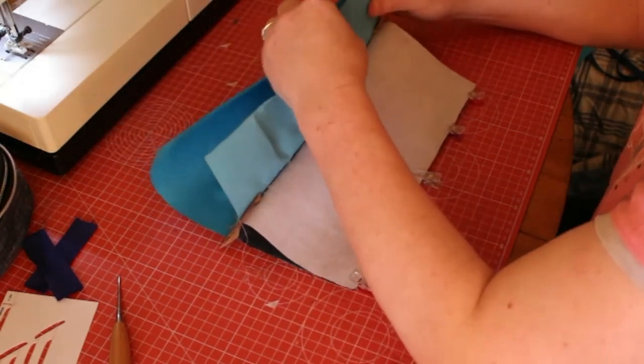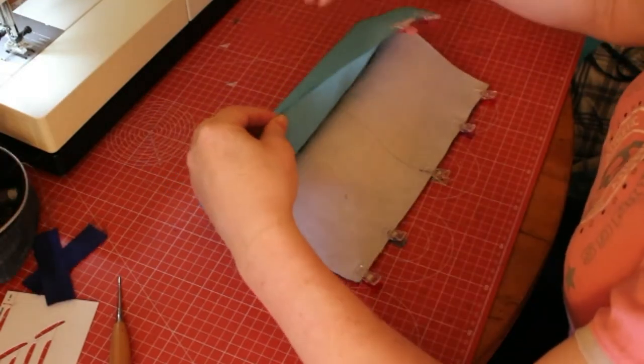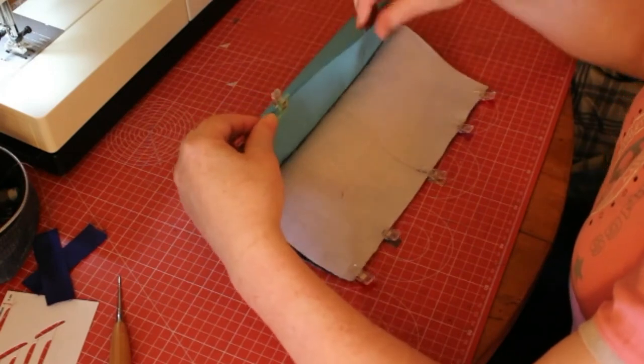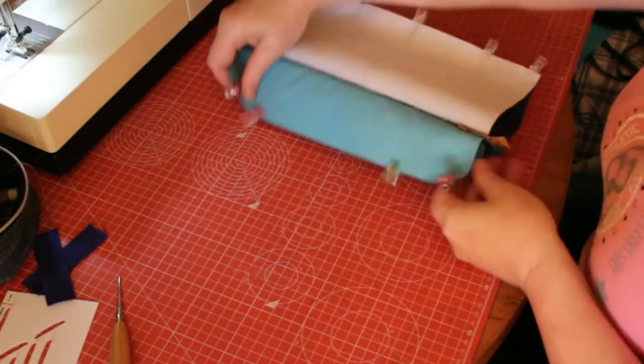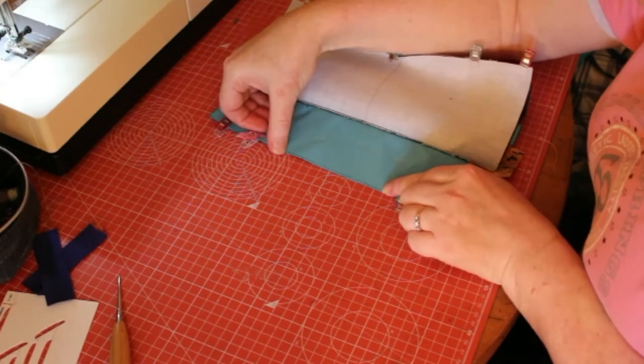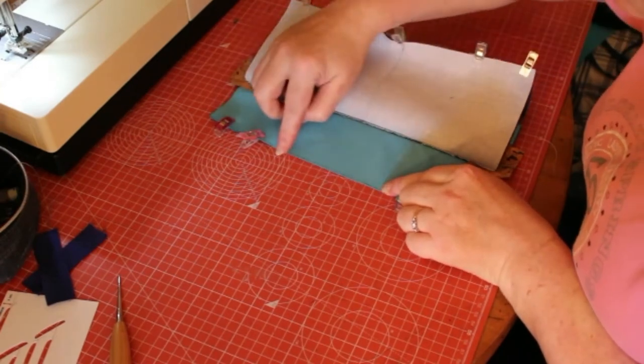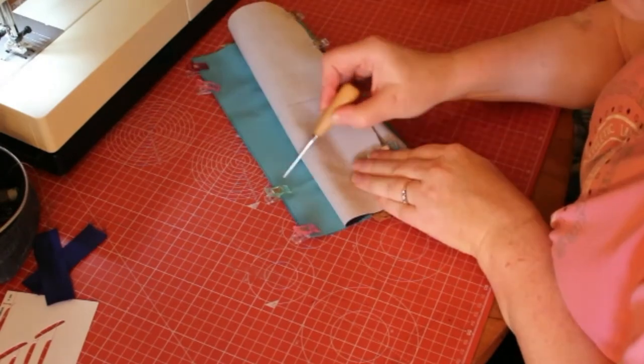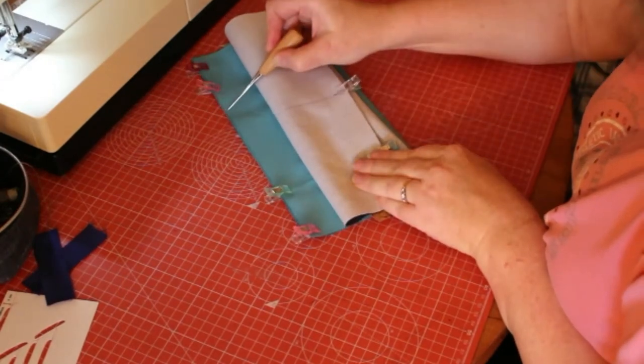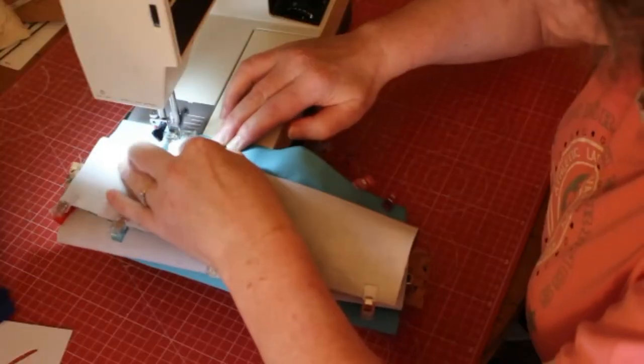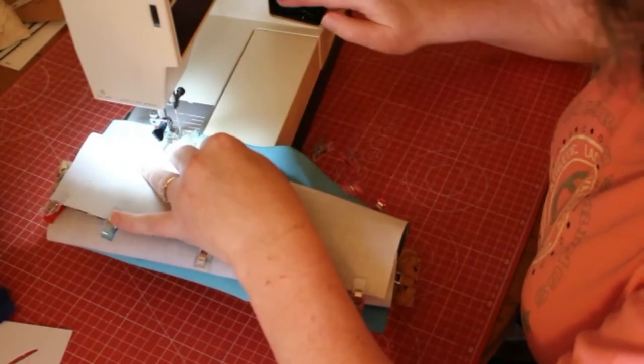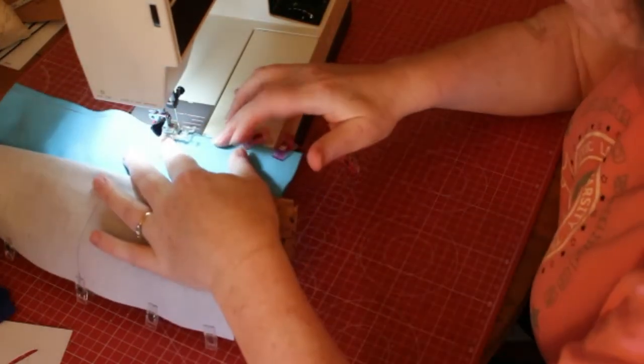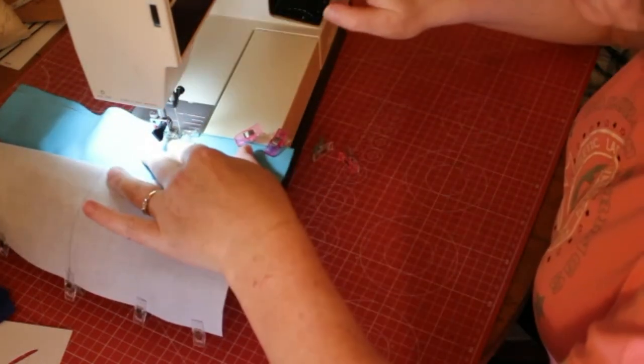Sew up the lining but leave an opening in the lining. This bag is going to be birthed through the lining, so you need quite a large opening, about fifteen centimeters, to make it easier to turn out the bag. Backstitch at the beginning and end of each side.